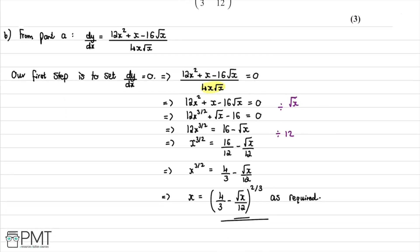This question was worth three marks. The first mark is for setting dy/dx = 0 and dividing by √x to reach 12x^(3/2) + √x − 16 = 0. The second mark is for beginning to rearrange and isolating 12x^(3/2). The third mark is for reaching the required final answer.